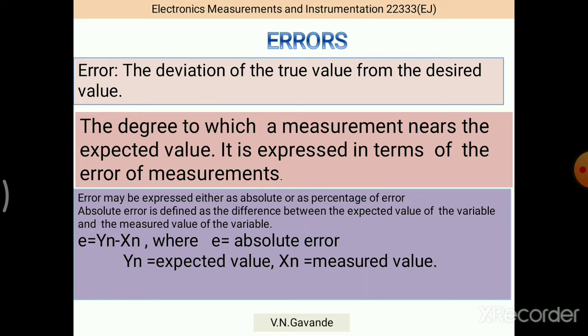Error may be expressed either as absolute or as a percentage of error. Absolute error is defined as the difference between the expected value of the variable and the measured value of the variable. As per the formula, E equals yn minus xn, where A is the absolute error, yn is the expected value, xn is the measured value.